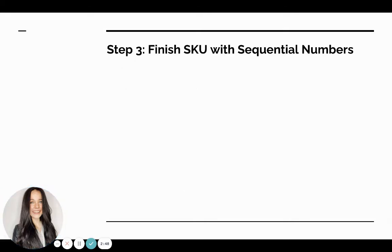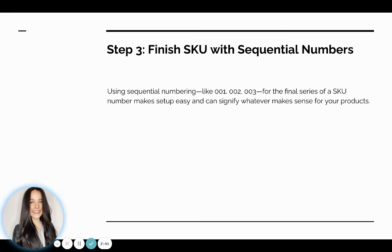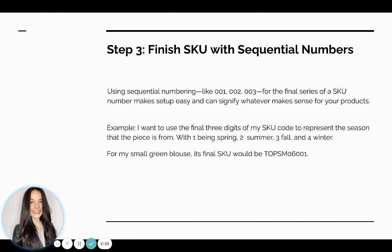Moving on to step three: you're going to finish your SKU numbers with a sequential series of numbers — whether that's 001, 002, 123 — it just needs to be sequential. This makes it easier to read and can help you keep track of seasons of products or the sequential movement of your inventory. For my green blouse, I'll finish the last three digits with the season of the piece. Since I remove things after the season, if my small green blouse was for spring, I'd end with 001. As we move into fall, having ones and twos off the sales floor becomes easy to track.